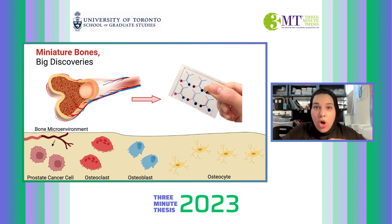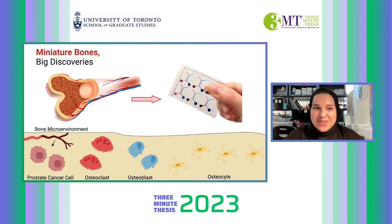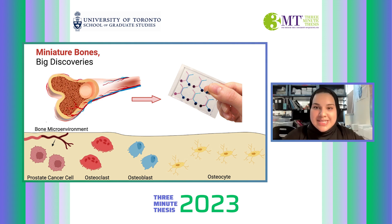My novel bone model enables us to study processes like cancer cell invasion on a tiny chip in the lab. Prostate cancer cells and all of the major bone cells can then be incorporated into this device to allow them to interact and mimic the structural and mechanical properties of bone. We can then monitor those interactions between the cells and image the process of prostate cancer cell invasion. Using this model has the potential to revolutionize how we study prostate cancer bone metastasis, among many other diseases.